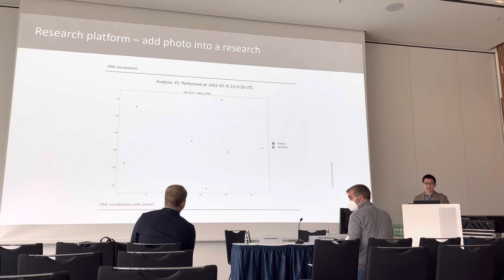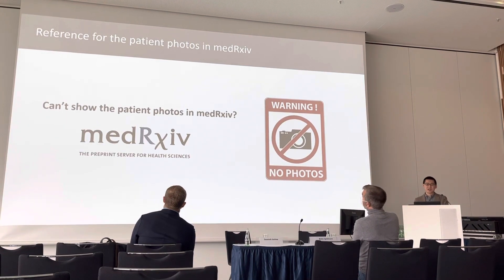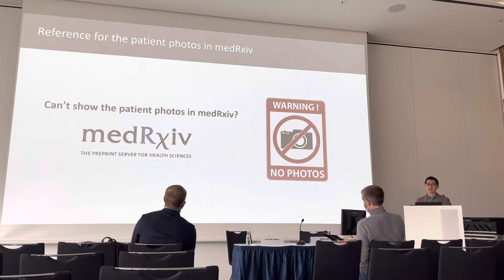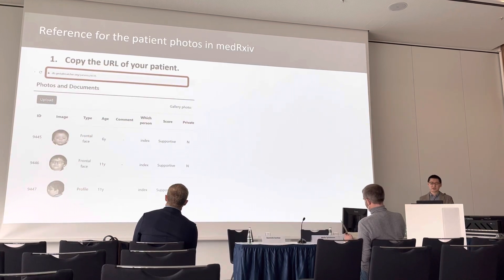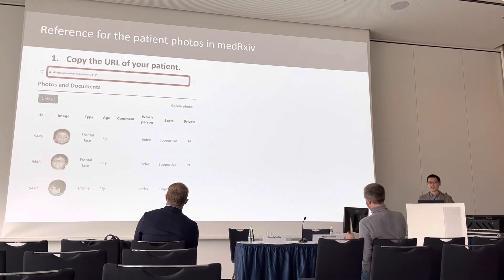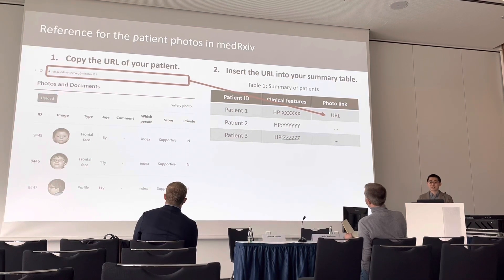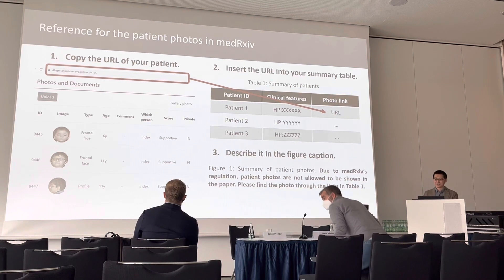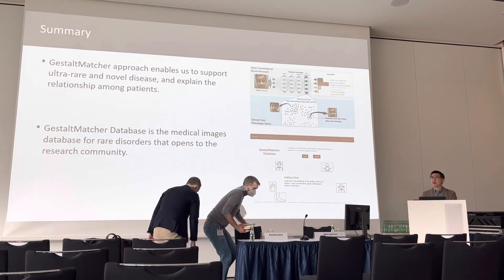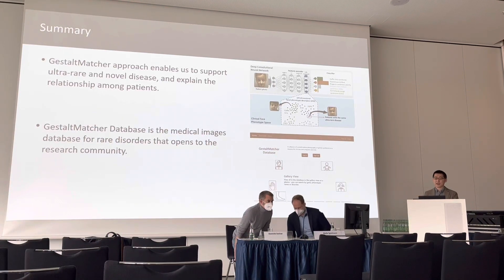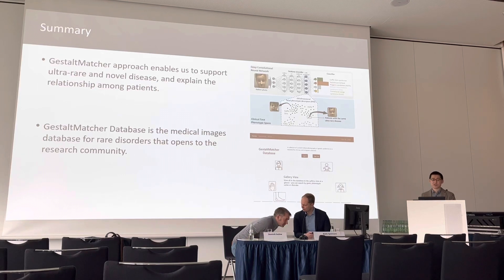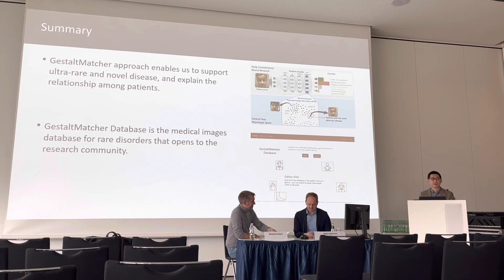Once you have results, you may want to publish to the MedRxiv archive. A common issue is that you cannot include photos directly. An alternative solution is to come to your patient record, copy the URL, and insert that link into the summary table in your manuscript, then describe in the figure caption that the patient can be found via that link. To summarize: our GestaltMatcher approach can analyze patients at the patient level, and our GestaltMatcher database provides services to analyze your cohort. Since the platform currently has limited accessibility, please contact us if you are interested.